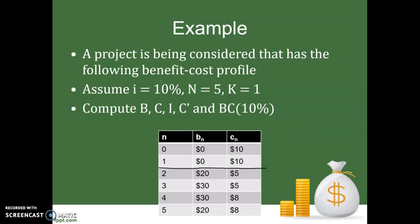We're going to use a 10 percent interest rate because we need to calculate the present values of all of these costs and benefits. The benefits don't start until we're several years into the future, and the costs span the whole life of the project. To make a comparison of benefits and costs, we need to compare them at the same point in time, so we're going to take all of these values, find the present value of each of them, add them all up, and then do our benefit-cost analysis.